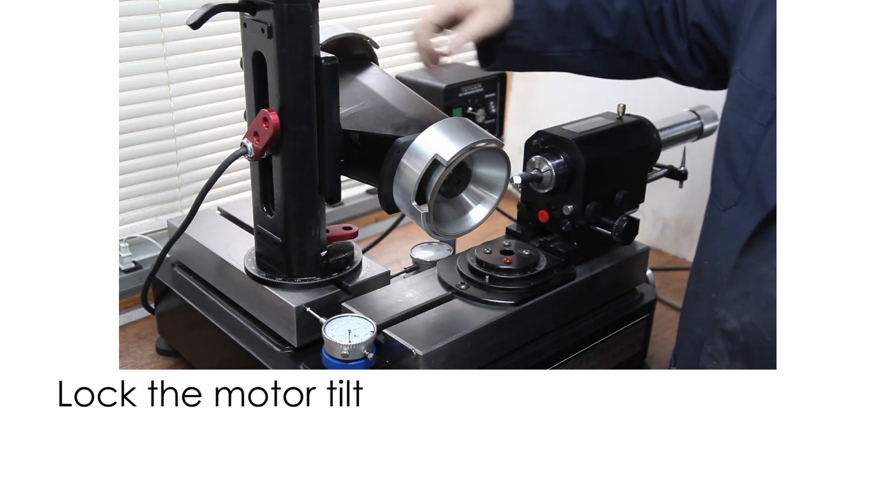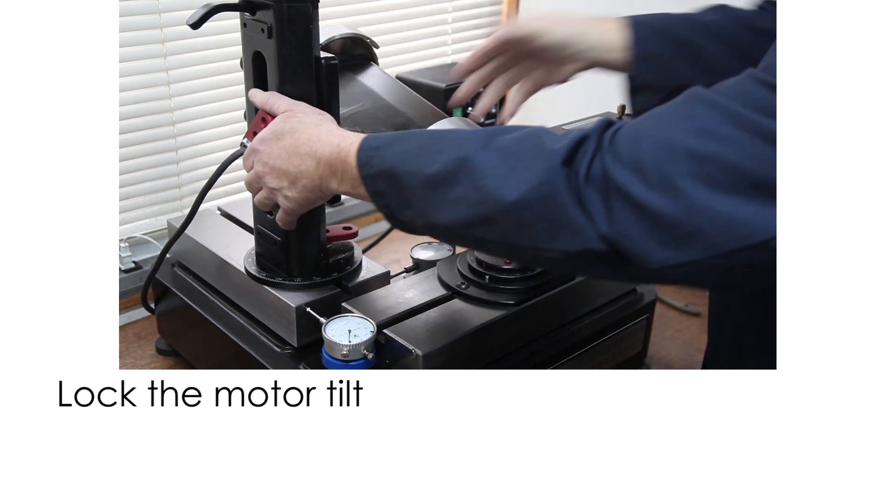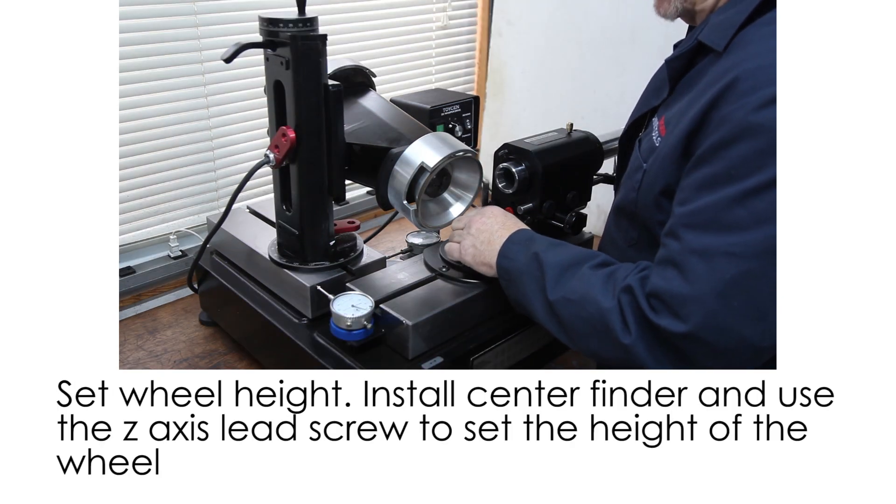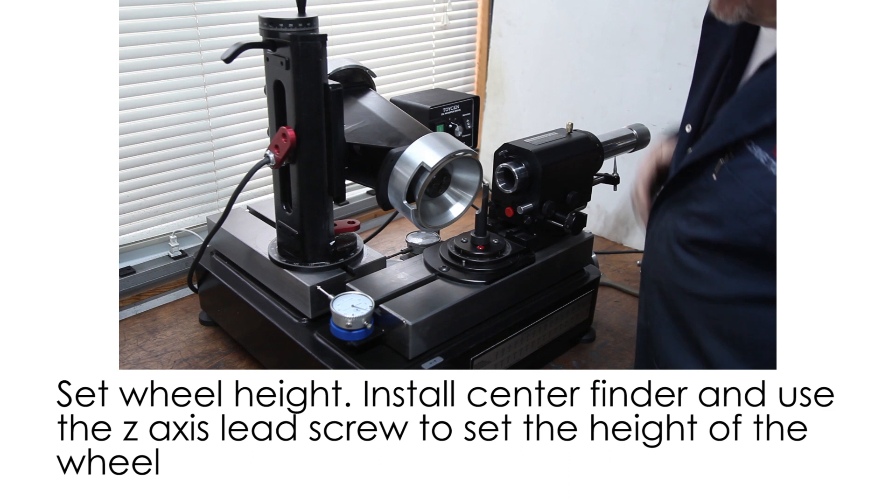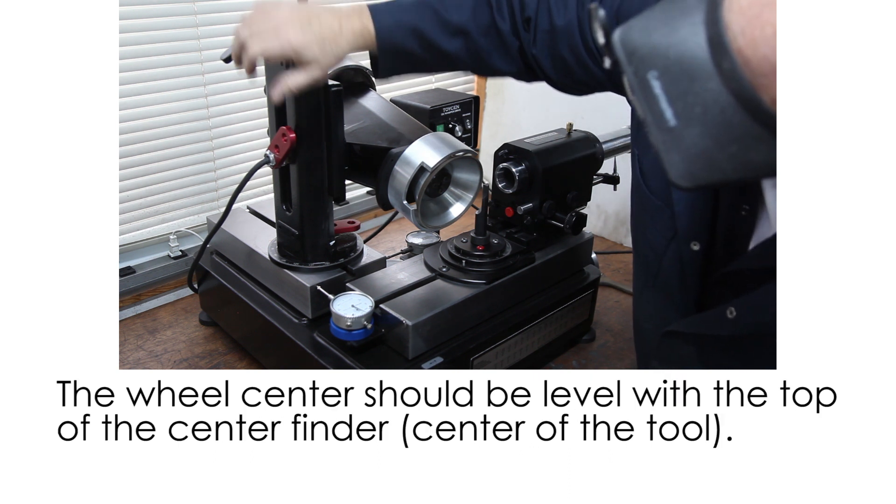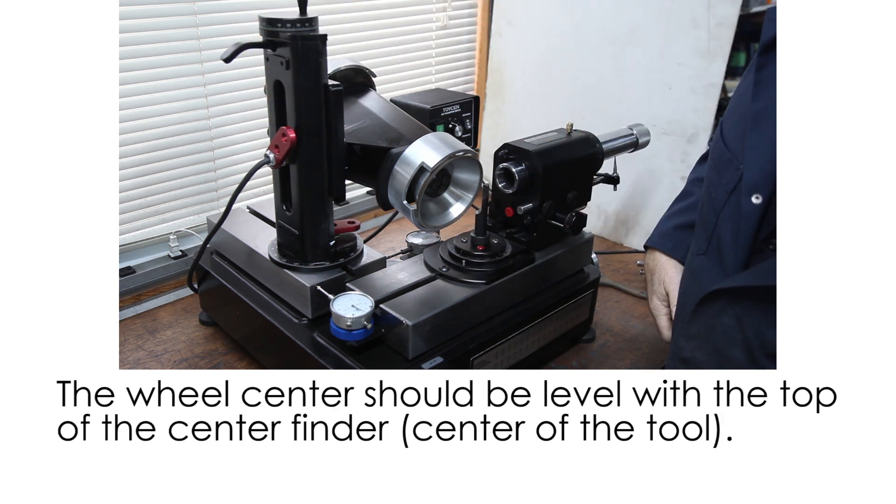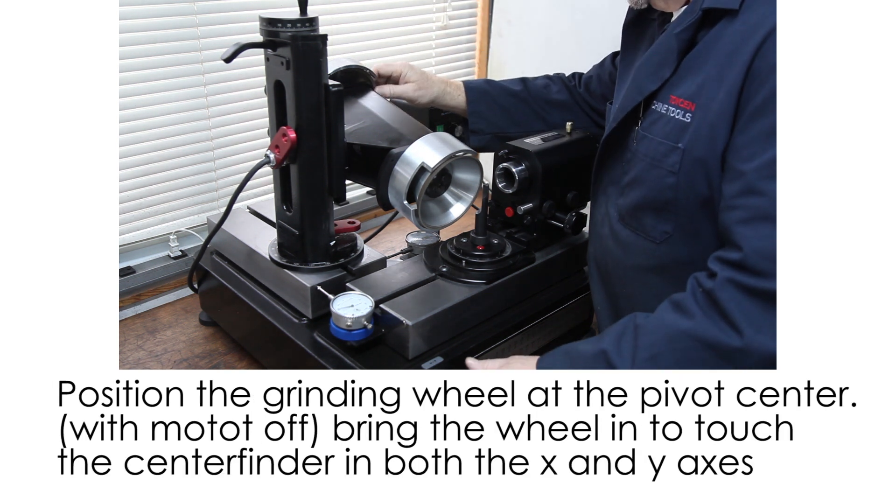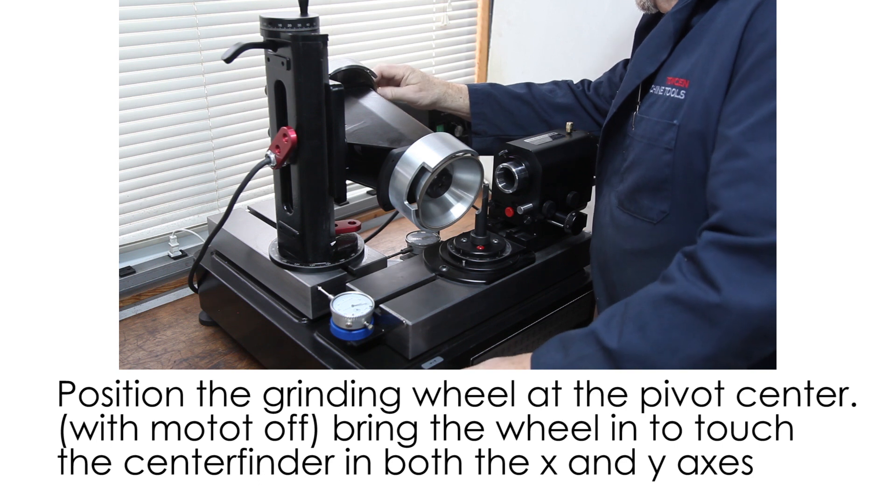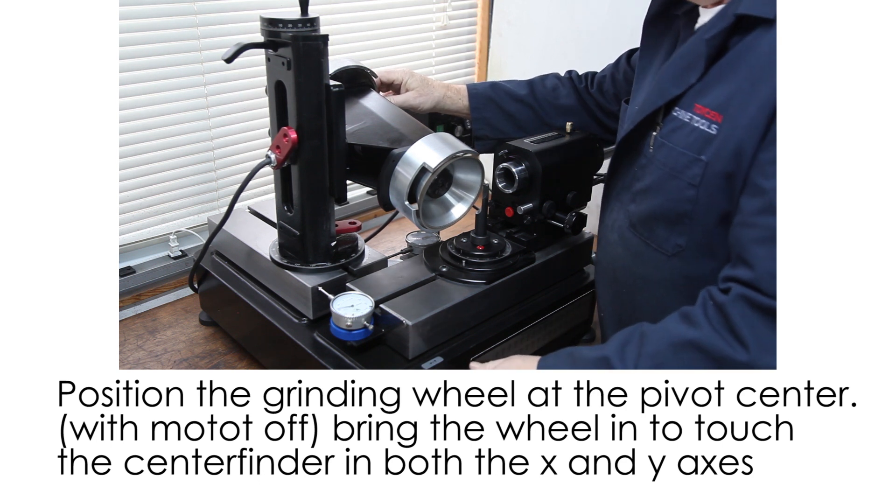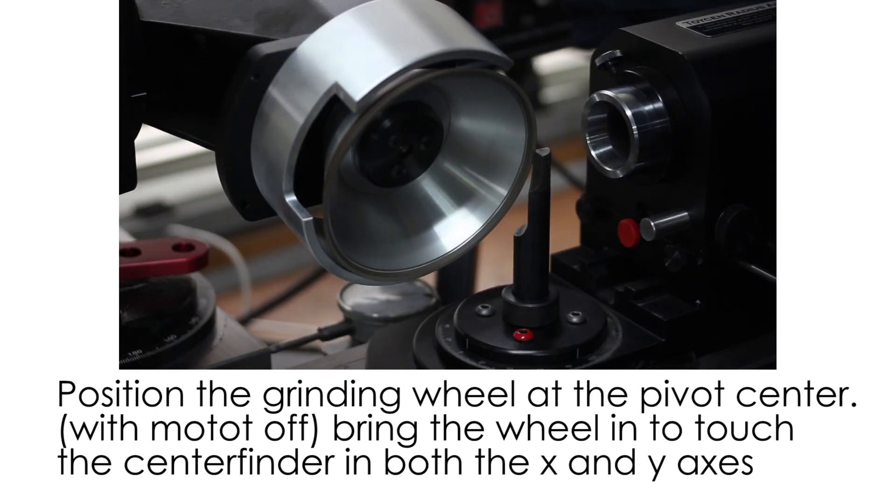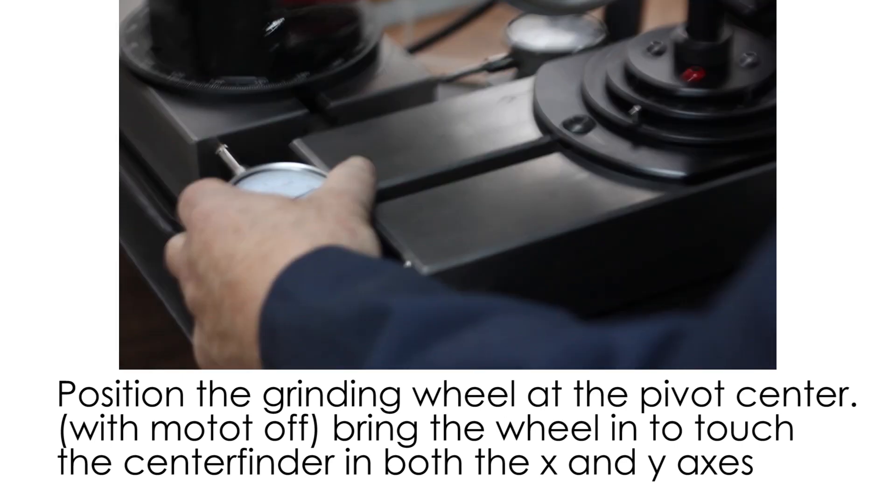So before you do anything, make sure all of your settings are snug. So using your centering pin, this is for centering your x and y axis. What you want is you want your wheel to be about the center of the wheel and you want to bring this in the y-axis just till it touches, and then make sure your indicator is set to zero.